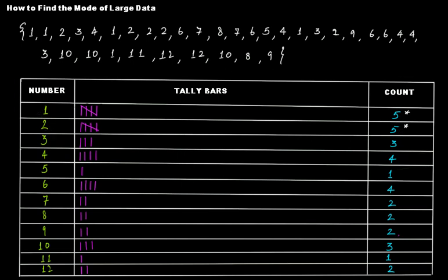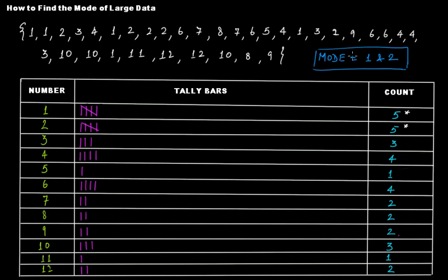Therefore, the mode of this given data set is one and two. Why one and two? Because we know that we can have more than one mode for a given data set. It all depends upon the frequency — the number of occurrences of each value. Both one and two have a frequency of five, so the mode is one and two.